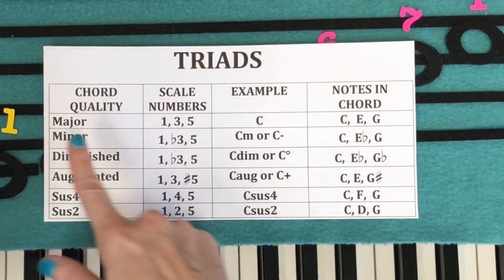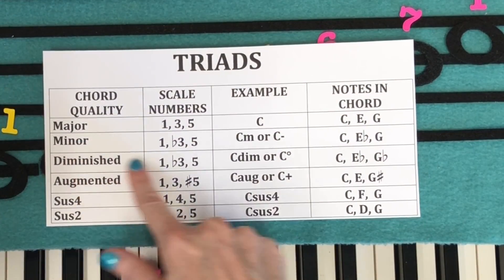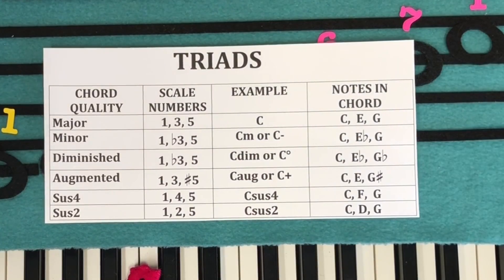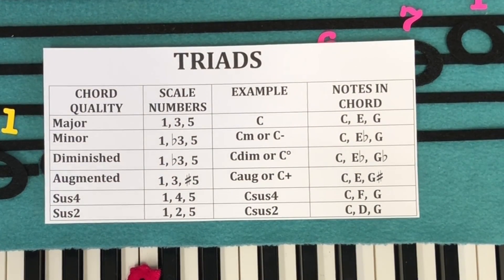The next one we're going to go over is a minor triad. If you know your minor scale, you could just take one, three, and five of the minor scale.